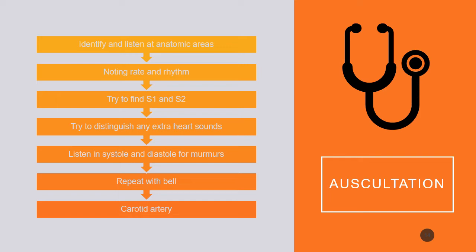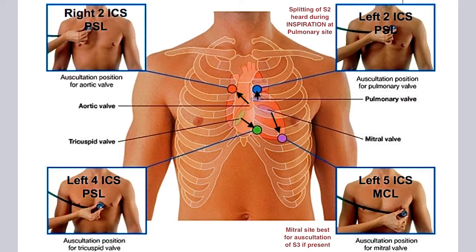When auscultating, identify and listen at the correct anatomic areas. Note the rate and rhythm. Listen for S1 and S2 and try to distinguish any extra heart sounds. Listen in both systole and diastole for murmurs. Repeat with the bell, especially listening for abnormal sounds, and listen over the carotid artery for bruits with the bell.